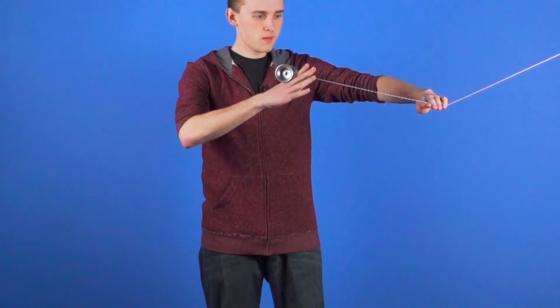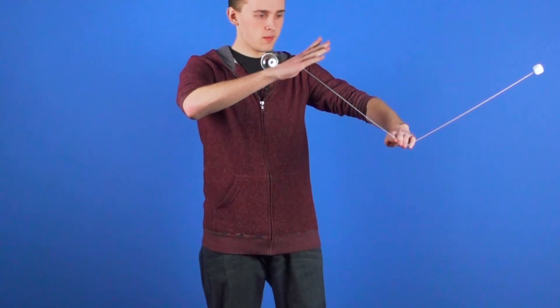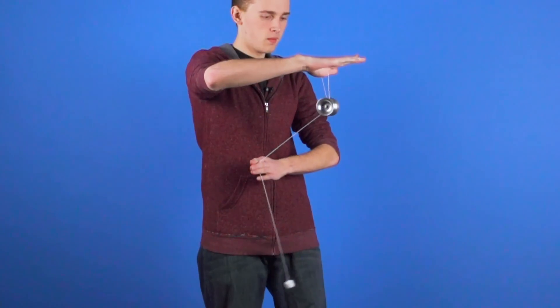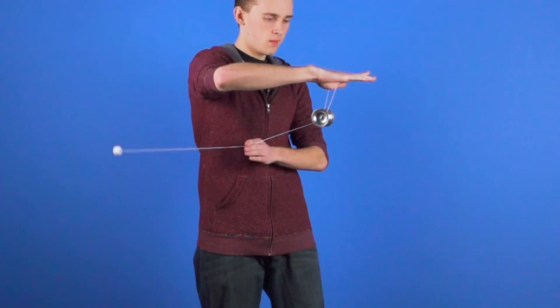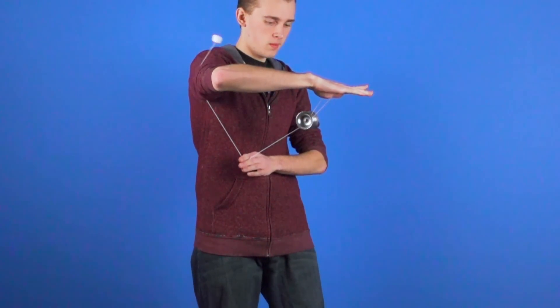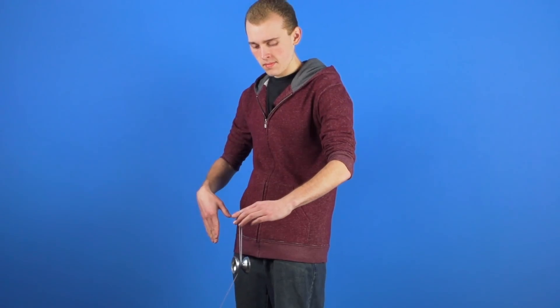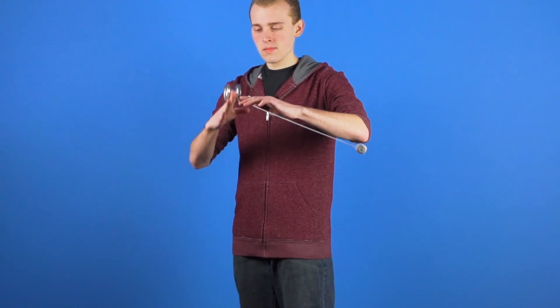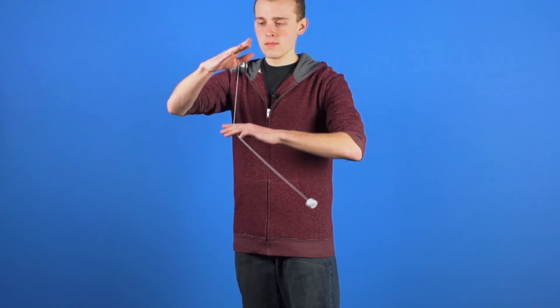After the counterweight is stalled, you want to take your opposite hand, pinch the string just a little bit and bring the counterweight over toward your throw hand side and over your throw hand arm. During that, I'm going to hop the yoyo off of my throw hand pointer finger and land it into a trapeze on my throw hand thumb.